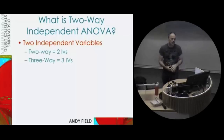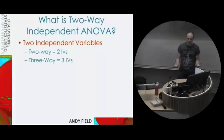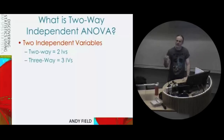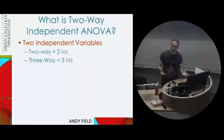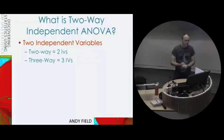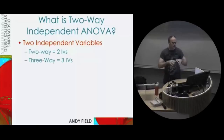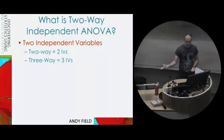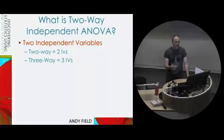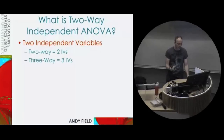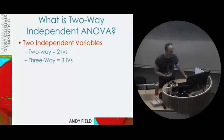When you come across someone having done a two-way ANOVA, that means they've manipulated two independent variables. You might also come across studies that have used three-way ANOVAs, where they've manipulated three independent variables. Whenever you see an ANOVA described, you need to use this sort of one-way, two-way, three-way description — it just refers to the number of independent variables you've manipulated.